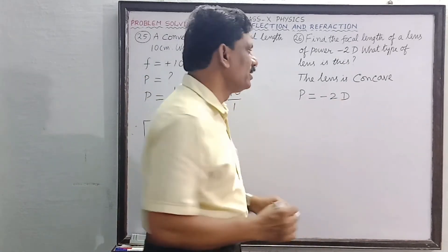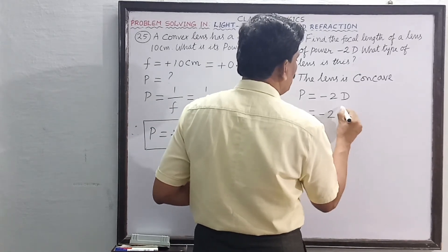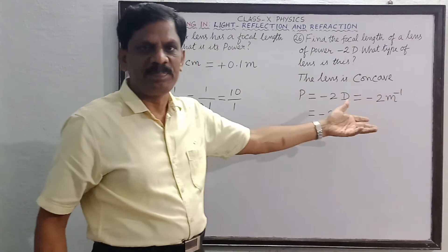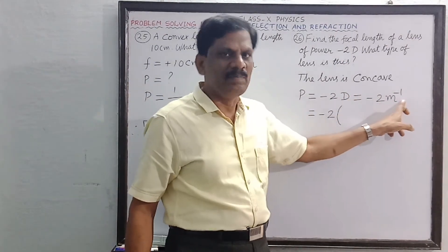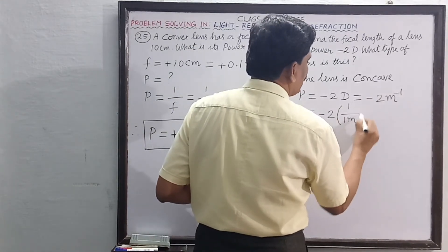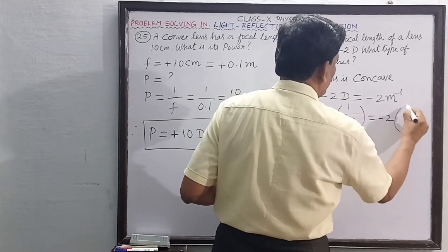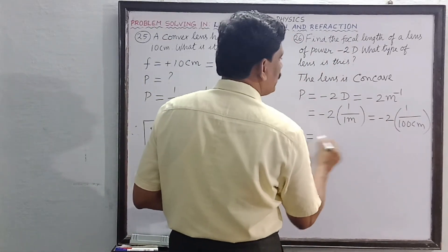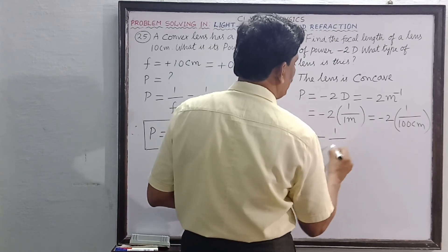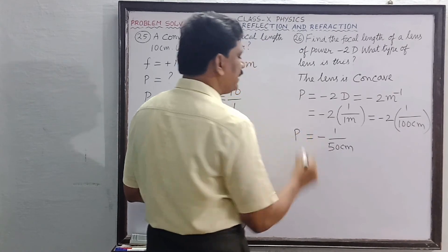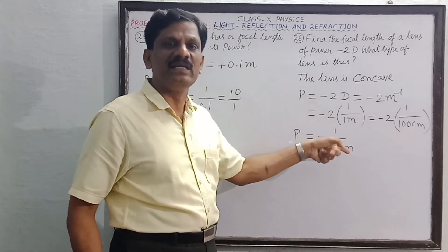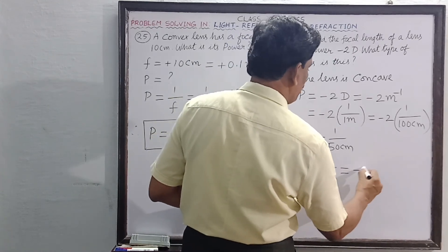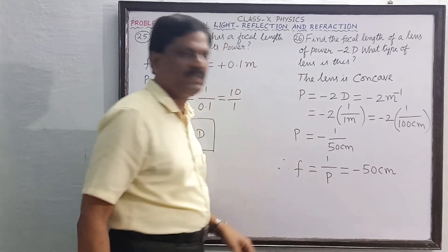Focal length is the reciprocal of power. Since 1 diopter equals meter to the power minus 1, which is 1 divided by 1 meter, or equivalently 1 divided by 100 centimeter, power minus 2 diopter equals minus 2 divided by 100 centimeter, which equals minus 1 divided by 50 centimeter. Therefore focal length equals minus 50 centimeter.